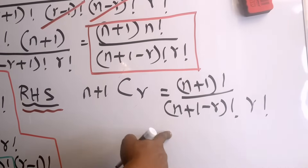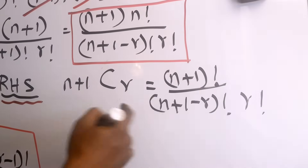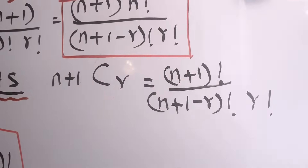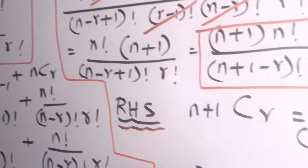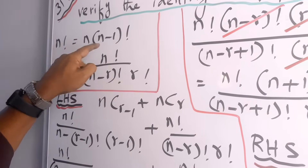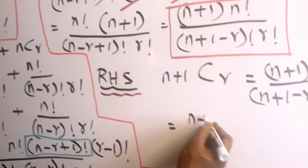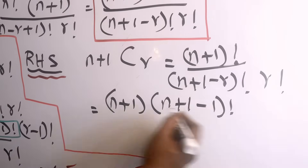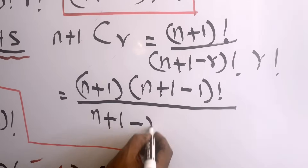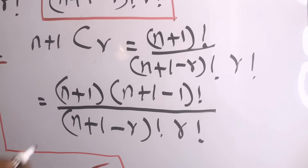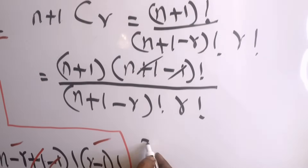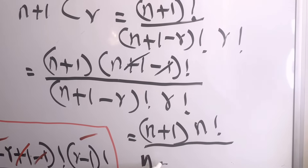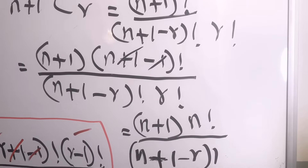With just a simple alteration, we are now very close. Looking at the denominator, we have (n+1-r) factorial times r factorial. In the numerator something is missing — we need (n+1) factorial. Using the formula n! = n·(n-1)!, we write (n+1) factorial as (n+1) times (n+1-1) factorial, which is (n+1) times n factorial. The +1 and -1 cancel, giving (n+1) times n factorial over (n+1-r) factorial times r factorial.